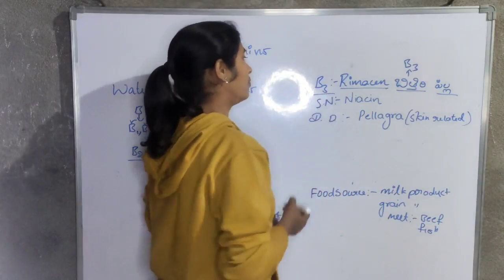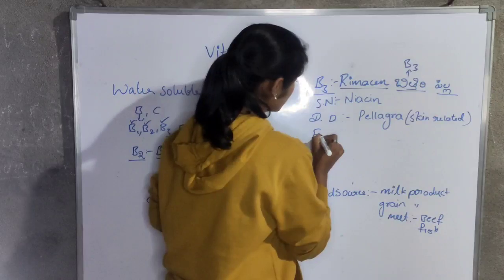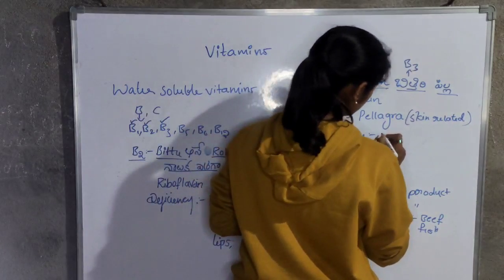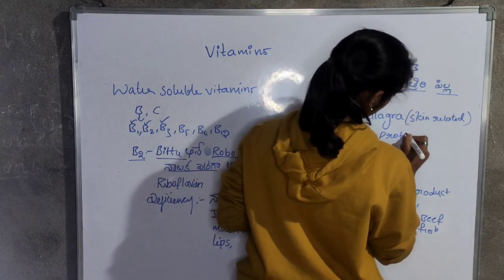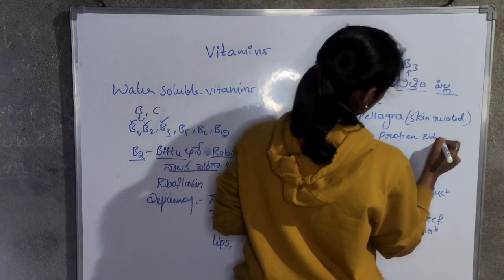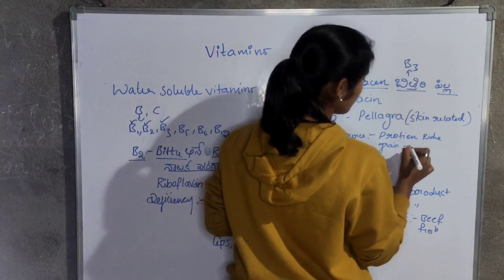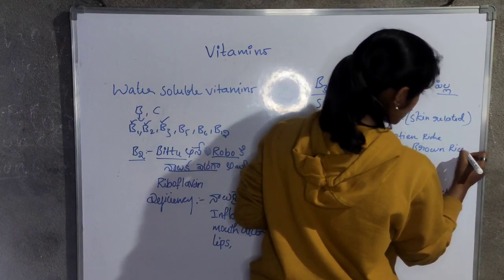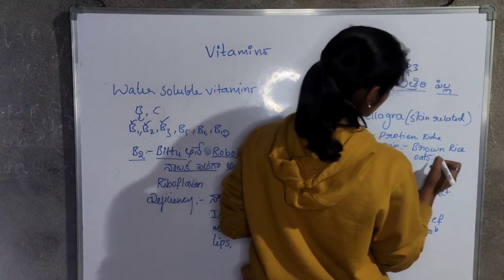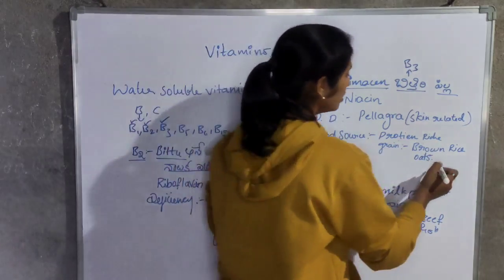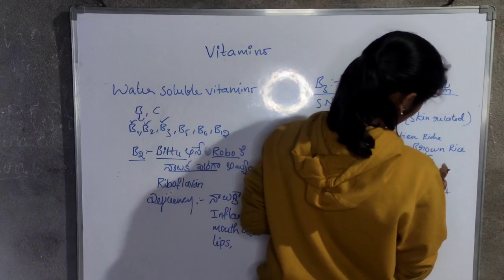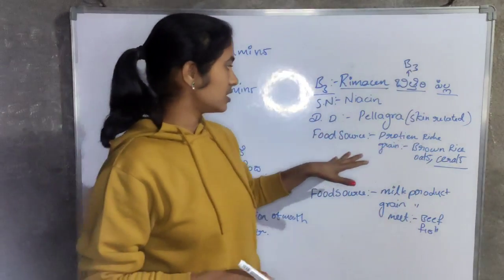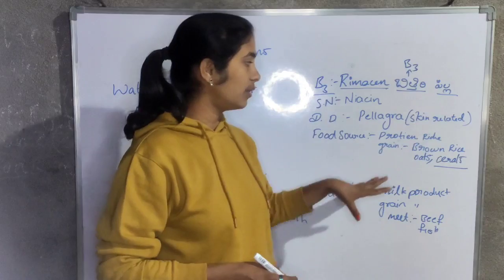The food sources for B3 include protein-rich foods, grain products, brown rice, oats — we should eat oats at breakfast to get B3 vitamin — and also cereals and greens. So we should eat brown rice, protein-rich food, oats, and cereals for B3.